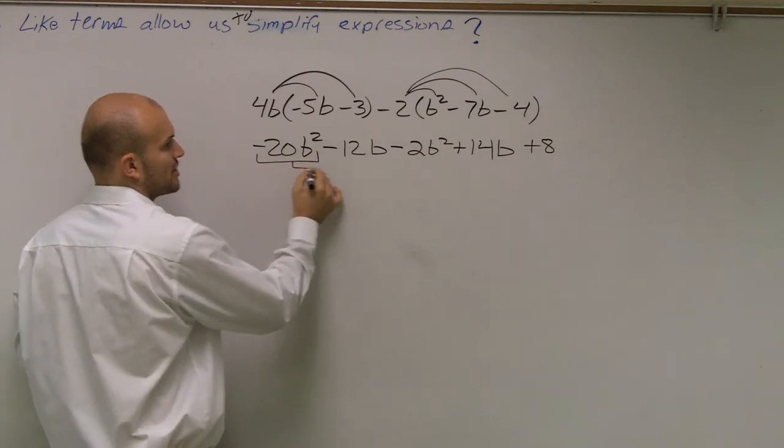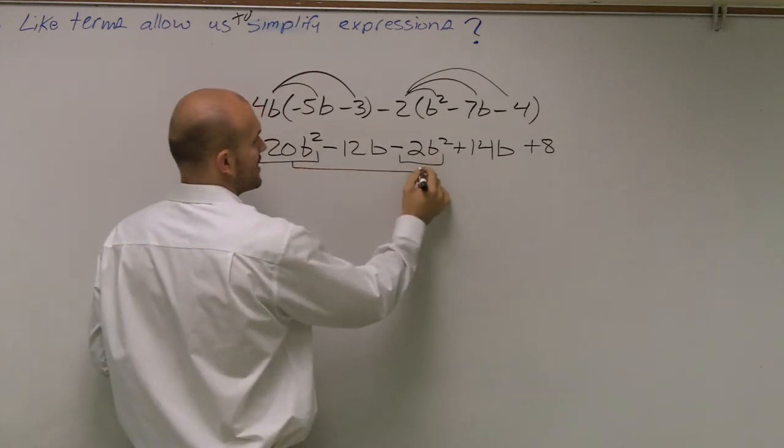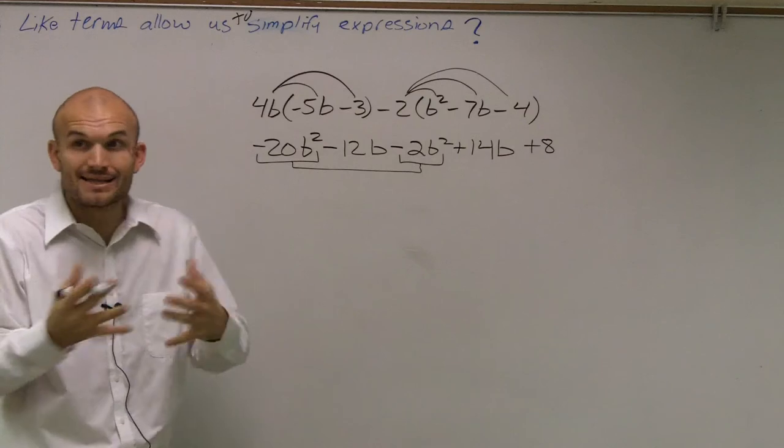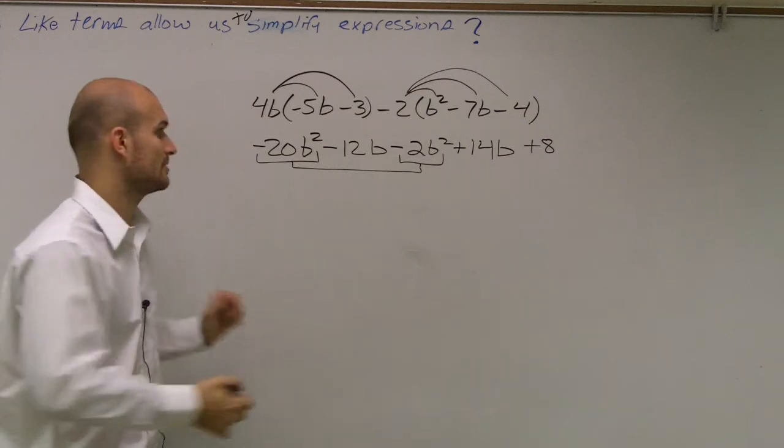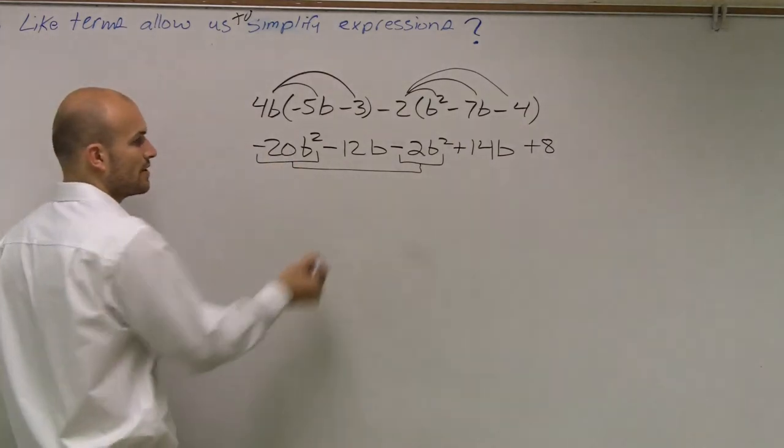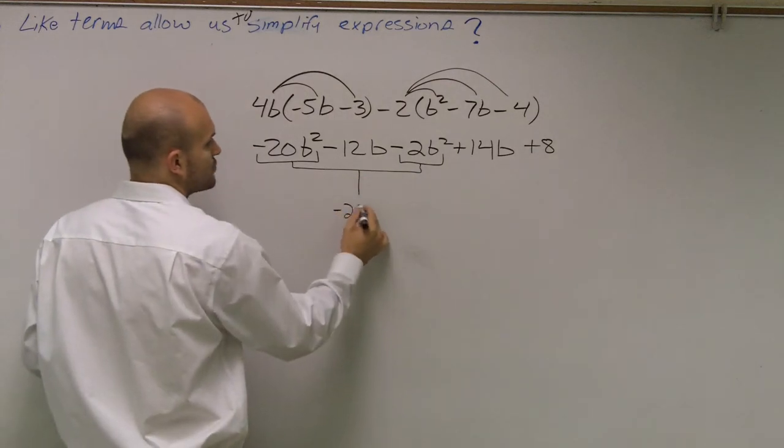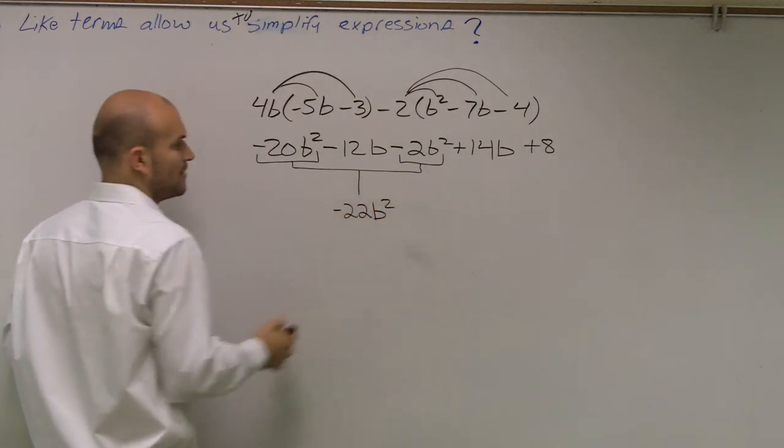So what I'm going to do is I notice that here's a squared term, and here's a squared term. So I can combine them, right? I can simplify them. So negative 20b squared minus 2b squared is a negative 22b squared.